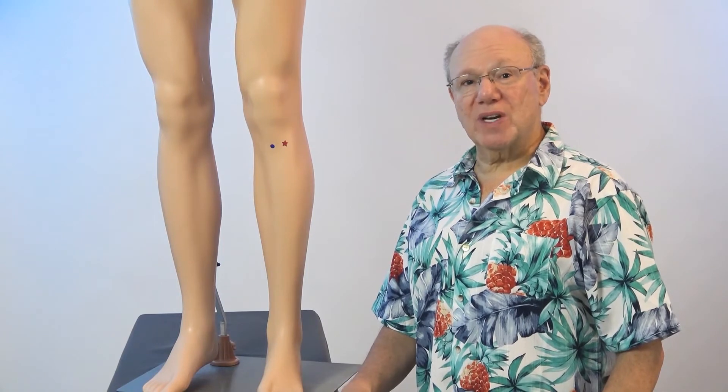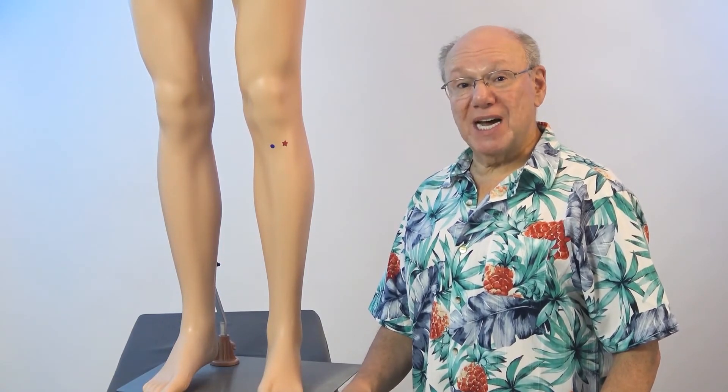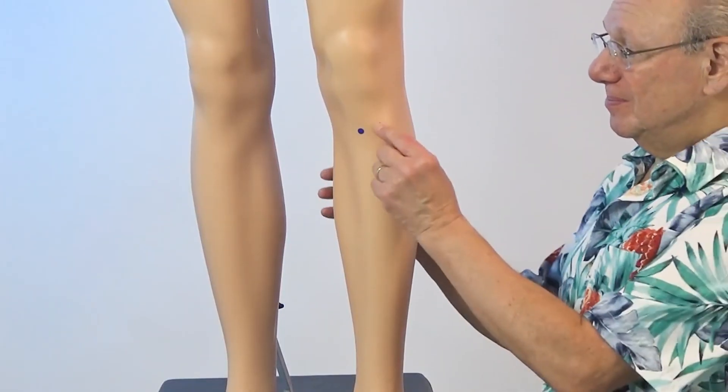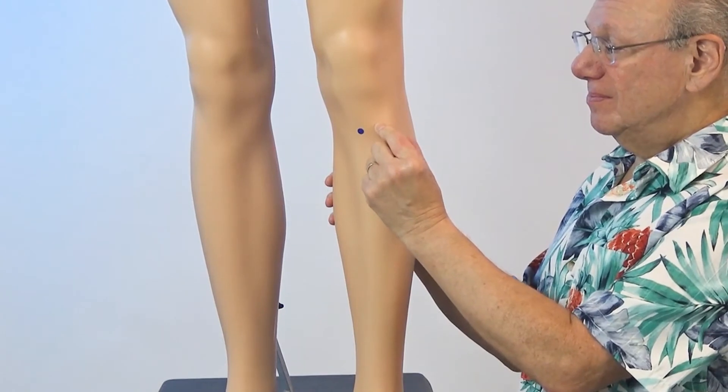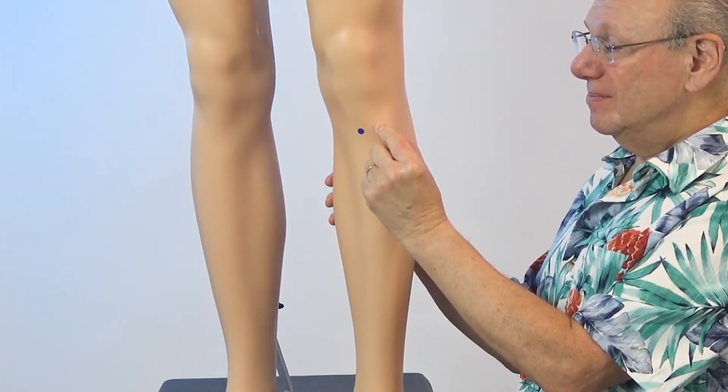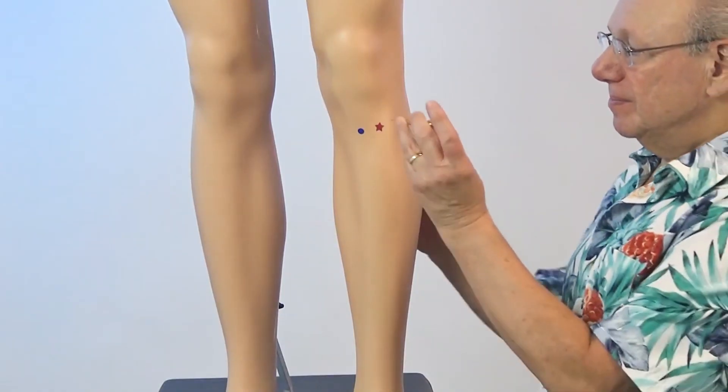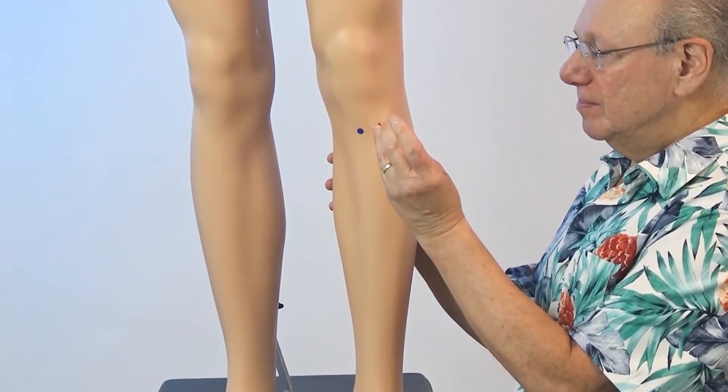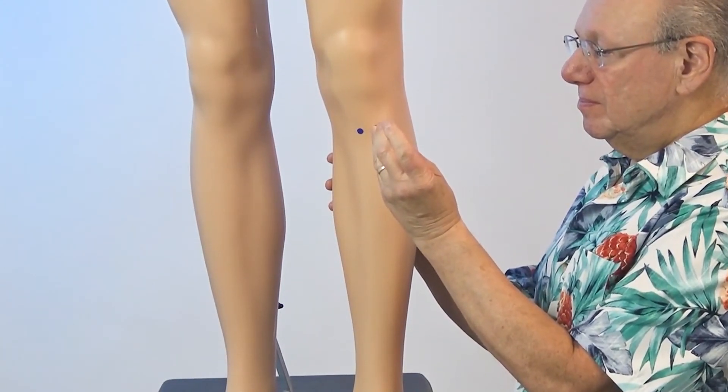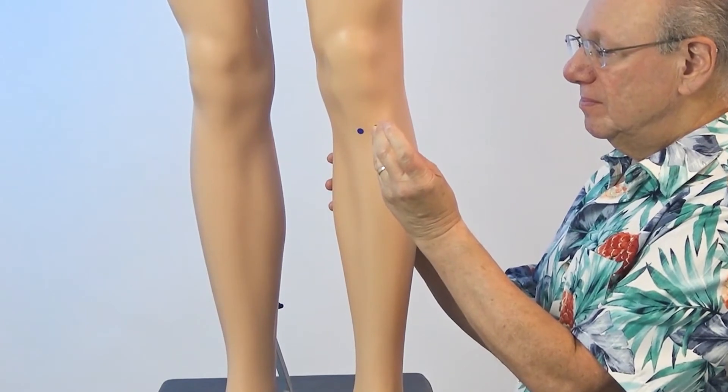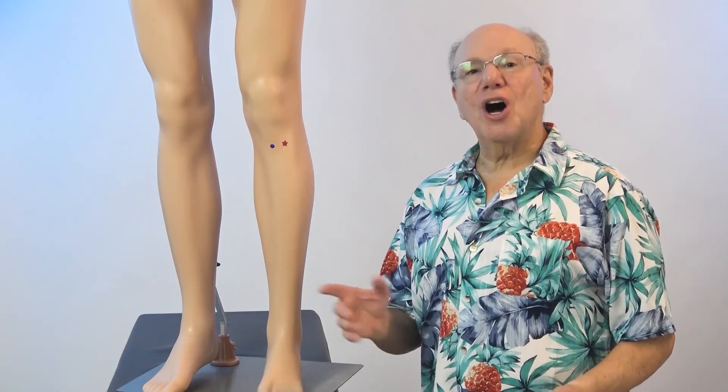Activate this point by rubbing the area quickly five times. Take a break for a count of five, and repeat four more times. Now find and activate Stomach 36 on your other leg.